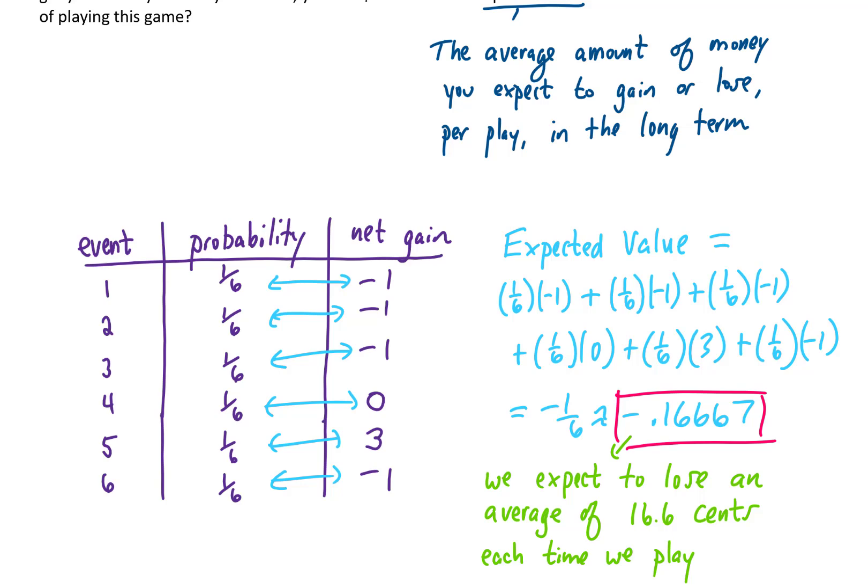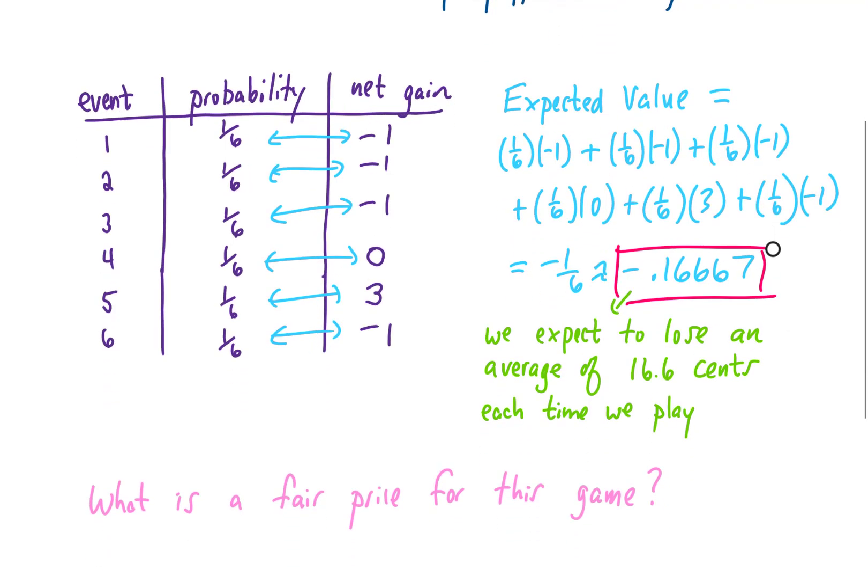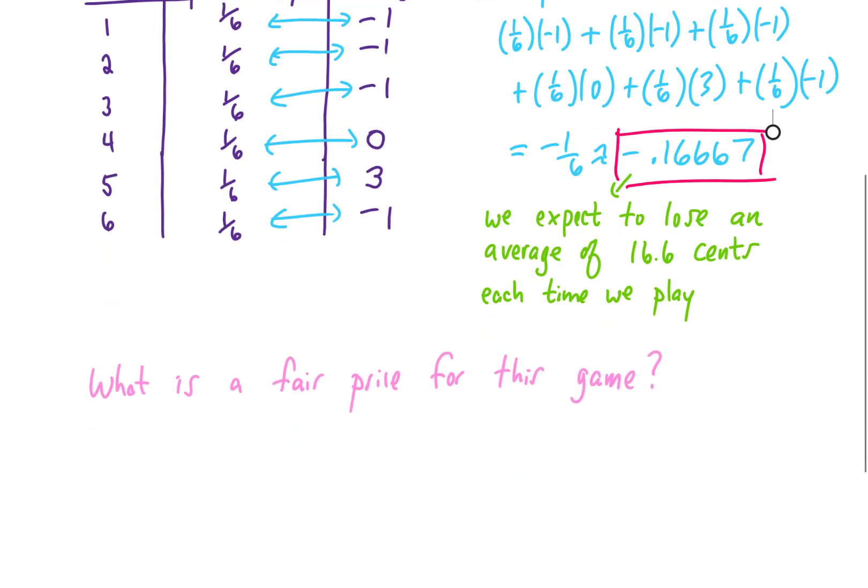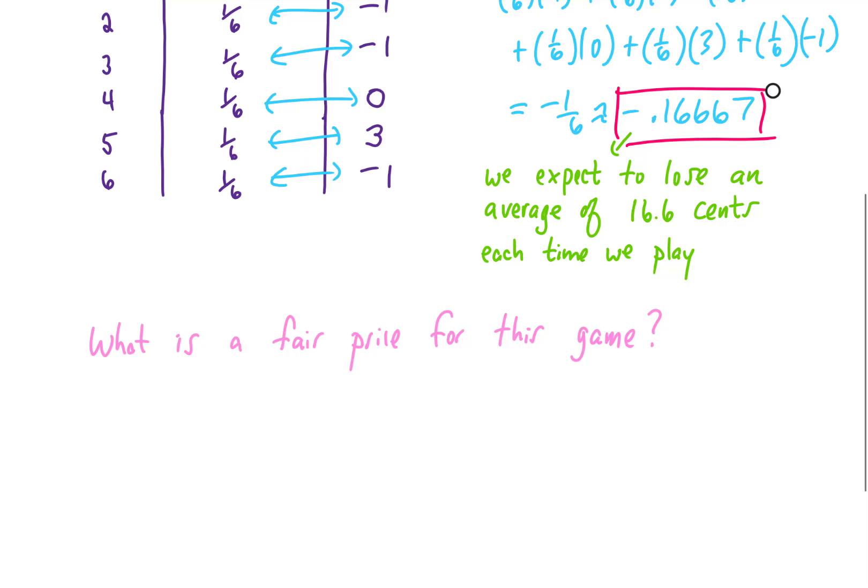So we might say that this game is unfair because the people who play it are expected to lose. So the question we might ask is, what would be a fair price for this particular game? Well, we paid one dollar for our ticket, and given that we're paying one dollar for our ticket, our expected value is to lose 16.6 cents per play.